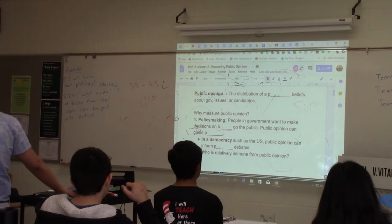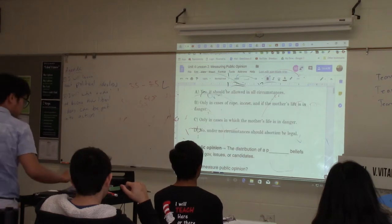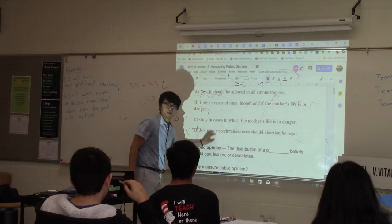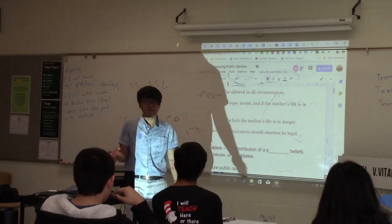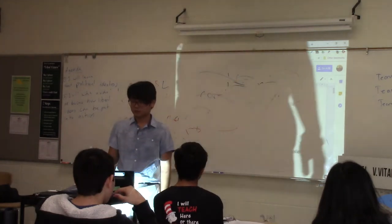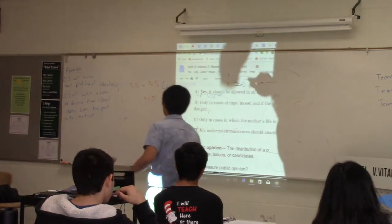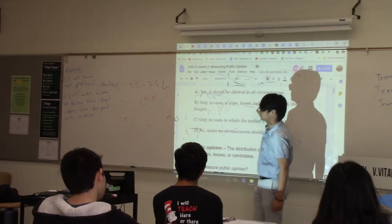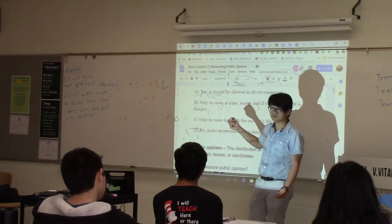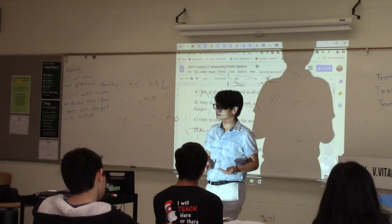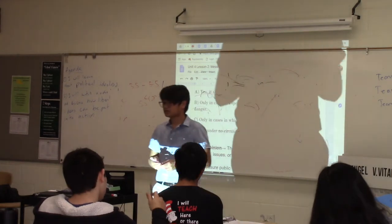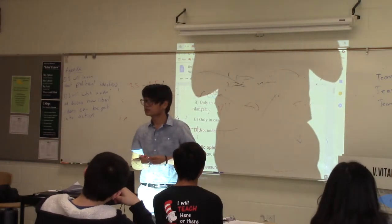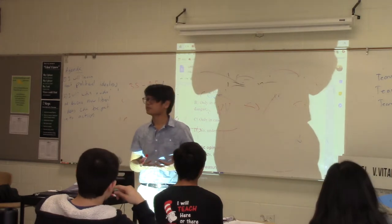Why do we measure public opinion? What's important about it? It informs policy — it should inform policy. Because we're a democracy, people believe public opinion should inform the decisions and policies that government makes. This is especially important in the legislative branch, where public opinion is very important.